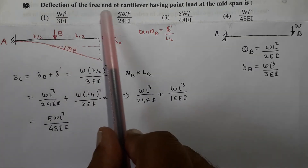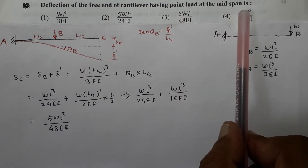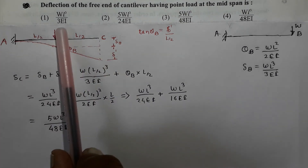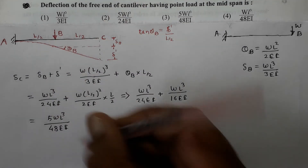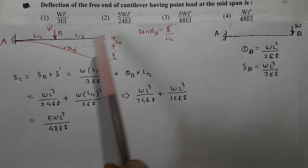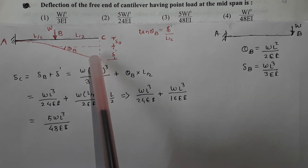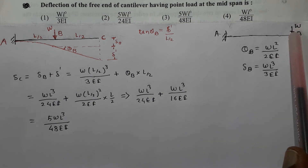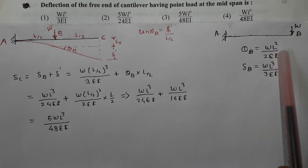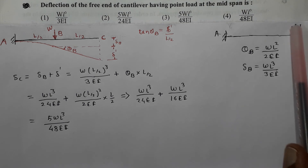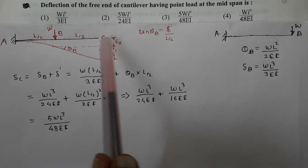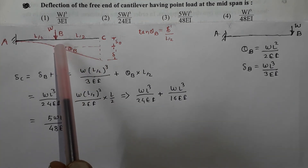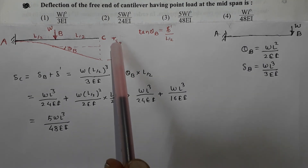Next question: Deflection of the free end of a cantilever having a point load at the mid span is? Let it be a cantilever A-B-C, where B is the midpoint and load W is applied at B. It is asked to get the deflection at C. For a cantilever A-B with load W at free end B, theta B = WL²/2EI and delta B = WL³/3EI. Deflection at C is nothing but deflection at B plus the additional deflection delta dash.